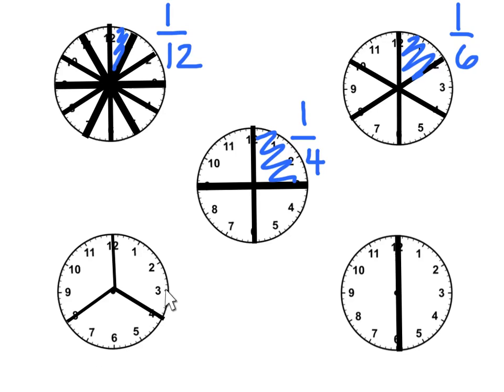Over here in the bottom left-hand corner, we have another clock. This clock has been broken down into 3 equal pieces. As you can tell, each of the thirds, we're going to call this 1 third, is the same thing as 4 twelfths. Because it includes 4 hours of the 12 hours, and 4 twelfths is the same thing as 1 third.